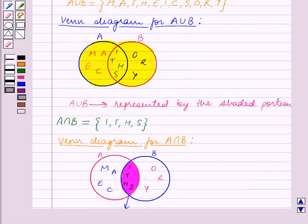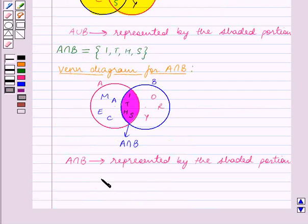So we have found what is A union B and A intersection B, and represented them by Venn diagrams. With this we end our session. Hope you enjoyed the session.